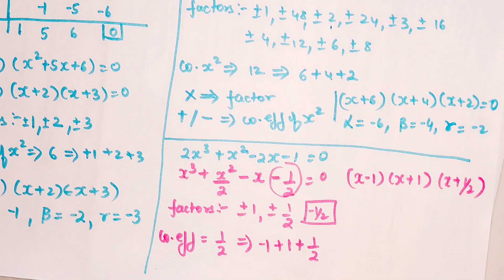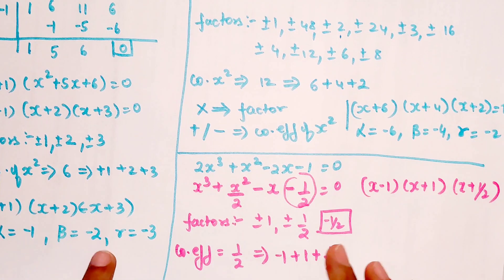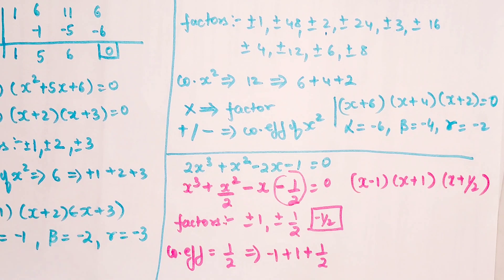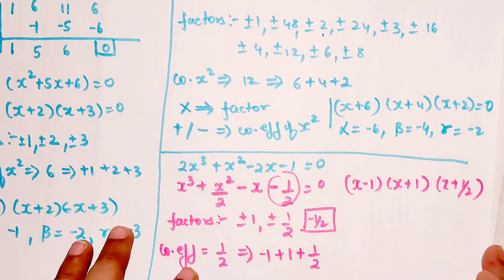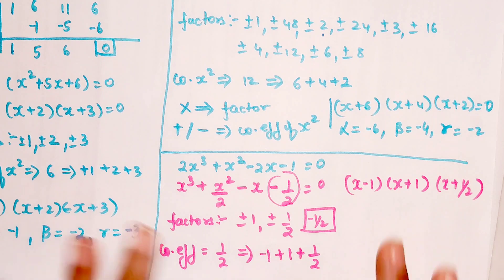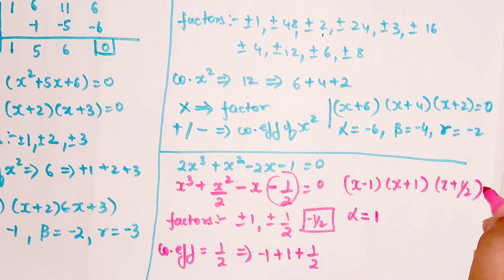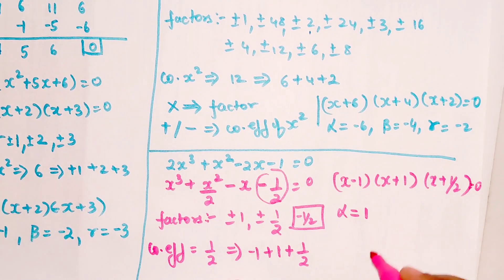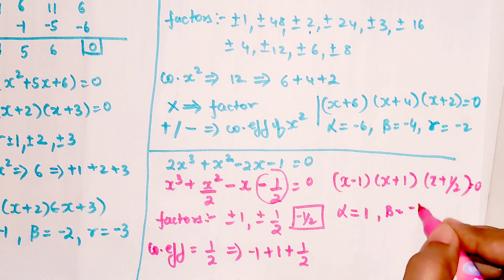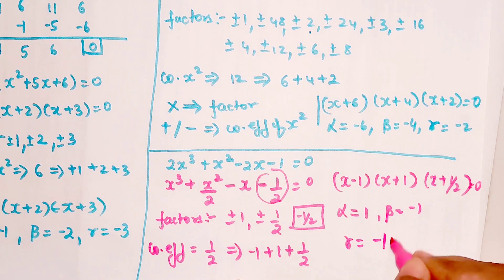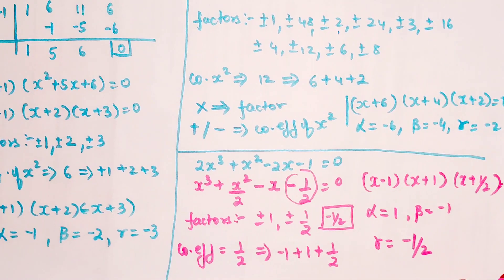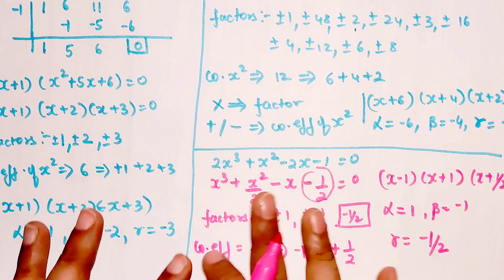The factorized form is (x−1)(x+1)(x+½) = 0. So the roots are: alpha = plus 1, beta = minus 1, and gamma = minus one-half. Instead of going through quadratic factorization and all that, these things became so simple with this mind-blowing trick!